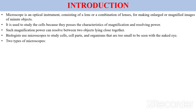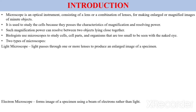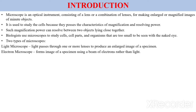There are different types of microscope — basically two types. The first is the light microscope, which uses light passing through one or more lenses to produce an enlarged image of a specimen. The second type is the electron microscope, which uses electrons to magnify or enlarge the image rather than light.